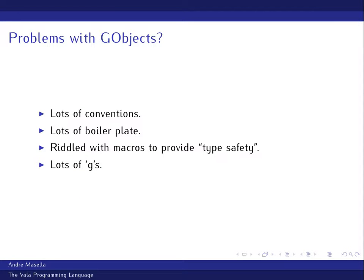The problem with writing GObject code is there is a lot of convention you have to follow. You have to name things correctly — put one underscore in the wrong place and it will fail horribly. You have to write a lot of boilerplate to marry all the pieces together so it knows you have all these methods and can find them and do appropriate inheritance. There's also a collection of macros to ensure proper casting. Since the C compiler can't check casting at compile time, the macro does it at runtime, which works, but you're trading off performance.